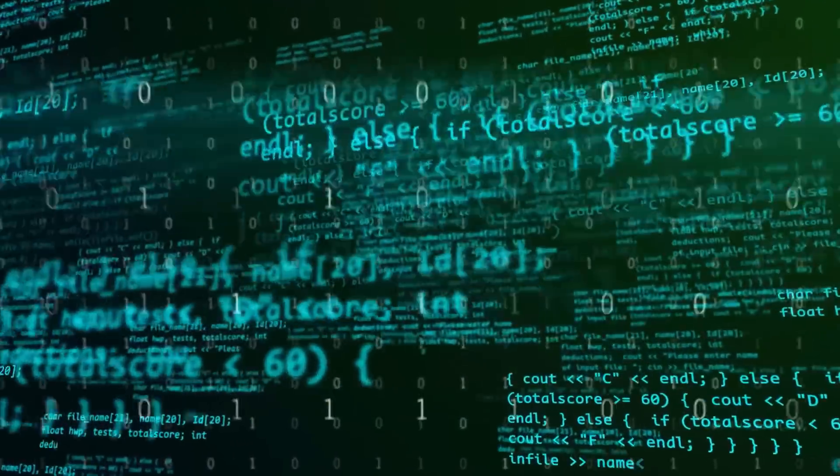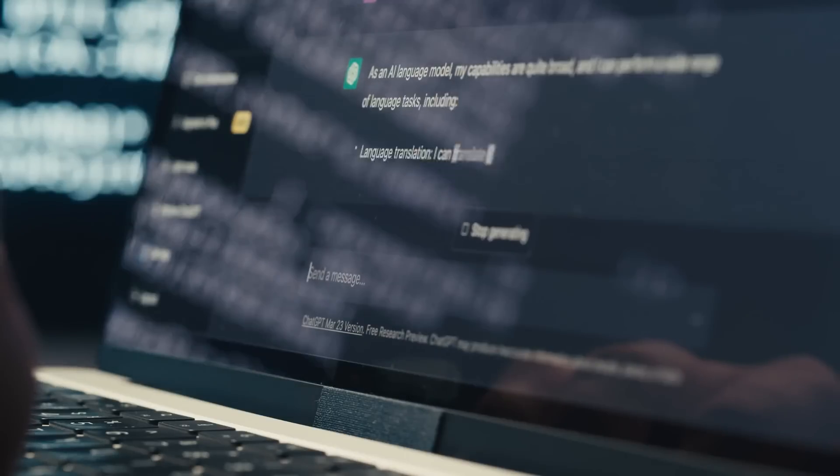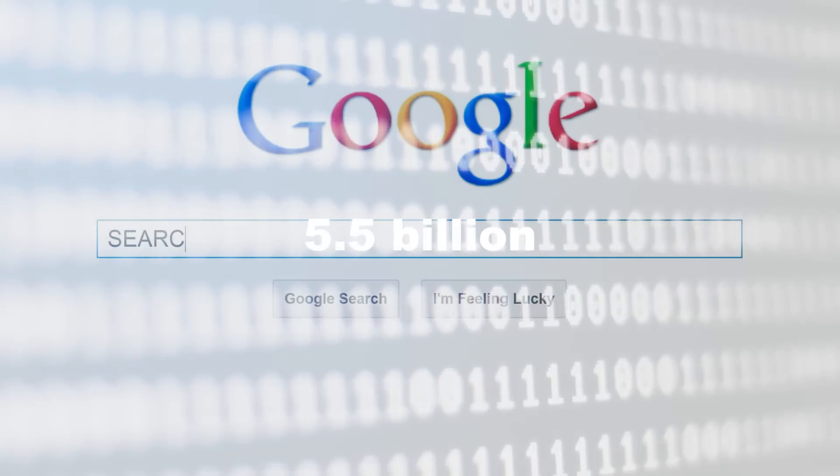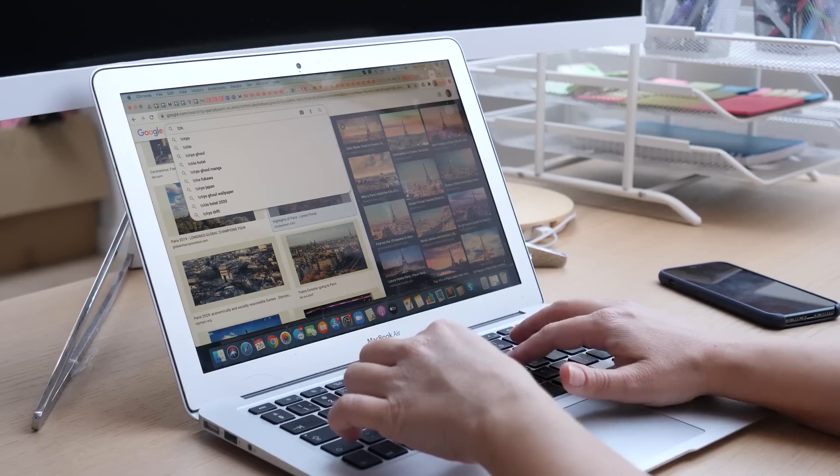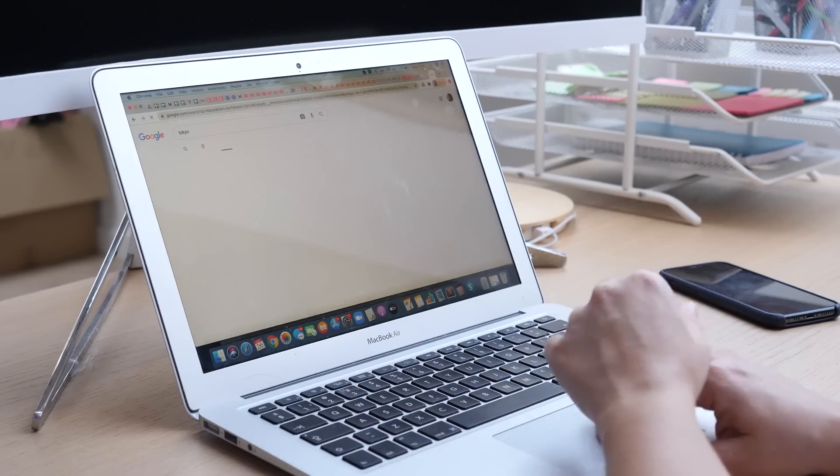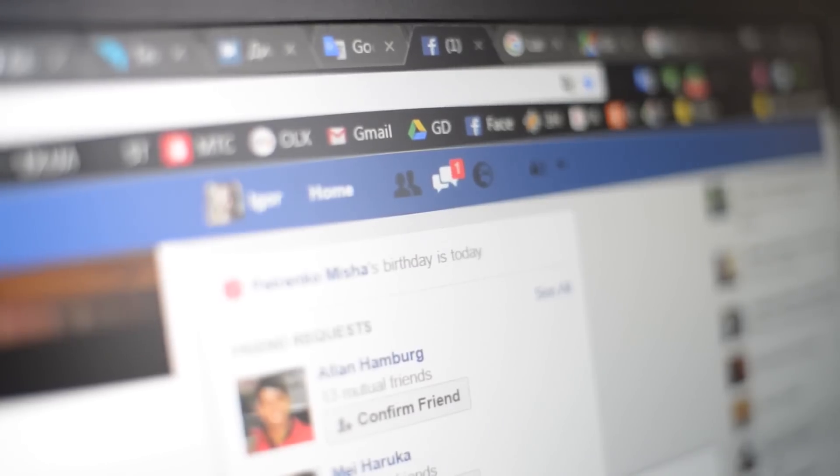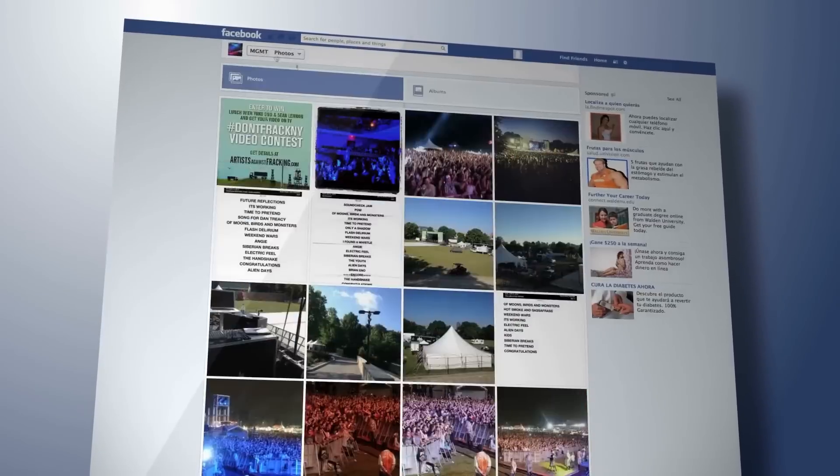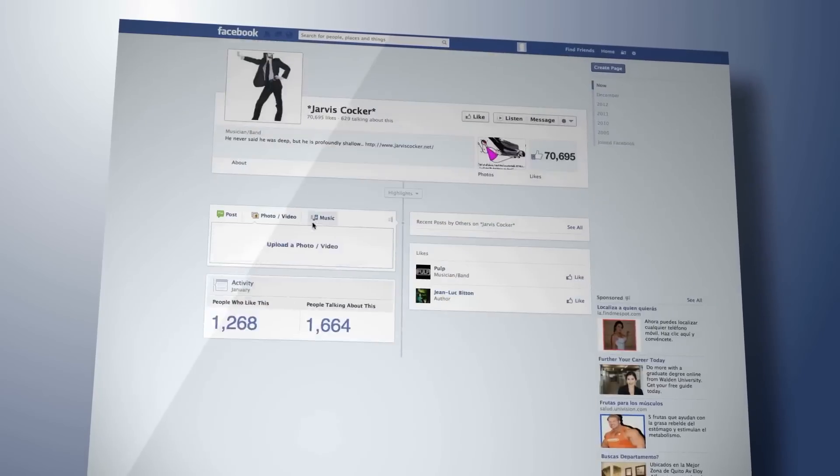Every single minute, a whopping 3.8 million searches are performed on Google. That's a staggering 5.5 billion searches every day. And guess what? These behemoth AI companies, Google, Facebook, Amazon, Microsoft, and more, are at the forefront of this data gold rush. They collect, store, and analyze staggering amounts of personal information.